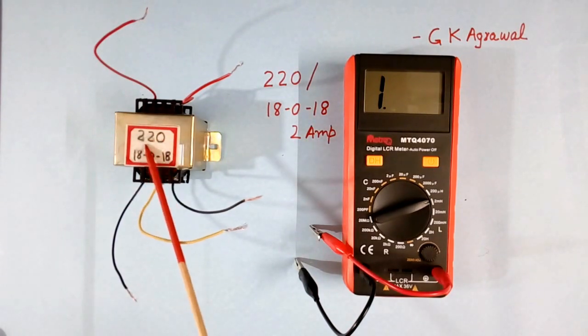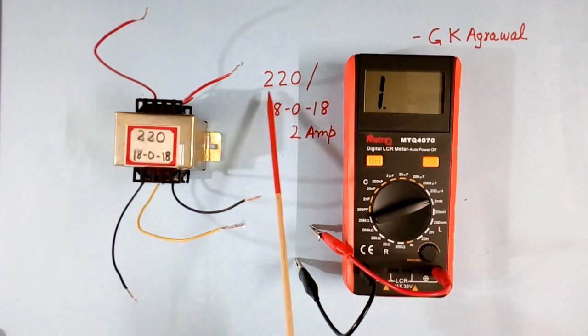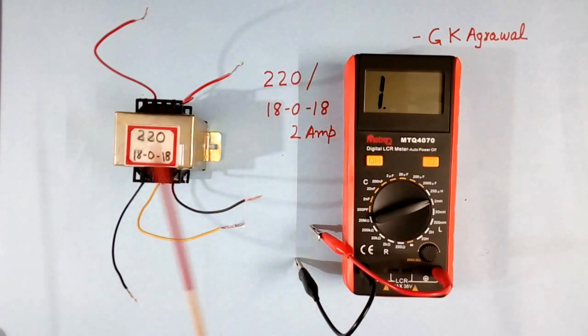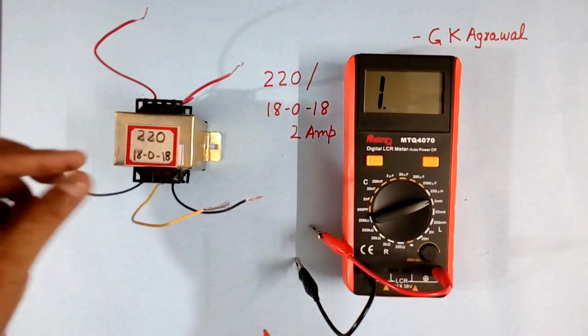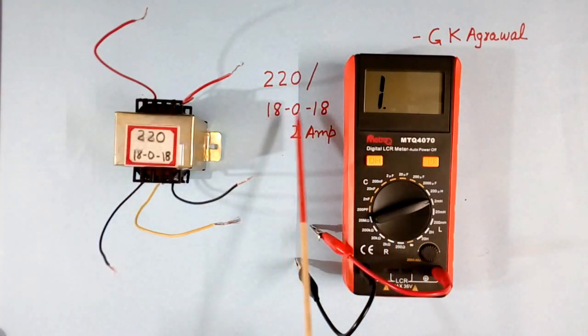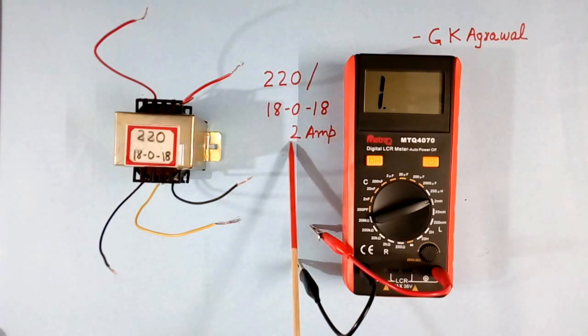Here I have one transformer. Primary is 220 volt, and secondary is 18-0-18. There is a metal tapping. Yellow color is the metal tapping, and these two black wires are 18-18. This is rated for 2 ampere secondary current.